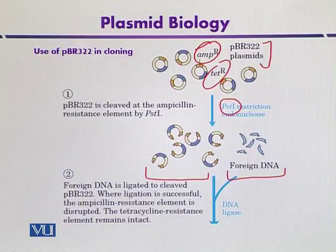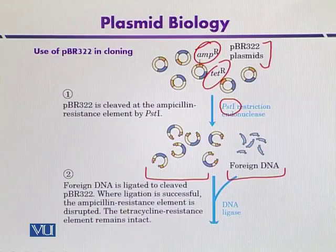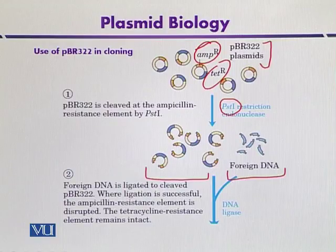After digestion, they will be ligated. When foreign DNA ligates within the region of the ampicillin resistance gene, its function will become inactivated. So that cell will become sensitive to ampicillin but still resistant to tetracycline.